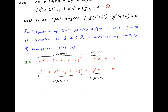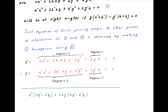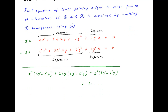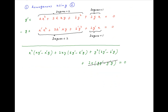Now multiply the first equation by g' and the second equation by g, and take the difference. We get x²(ag' − a'g) + 2xy(hg' − h'g) + y²(bg' − b'g) + 2x(gg' − g'g) = 0. Notice that the last term equals 0, and the remaining equation is homogeneous of degree 2, and therefore represents the joint equation of the lines joining the origin to the points of intersection of curves 1 and 2.